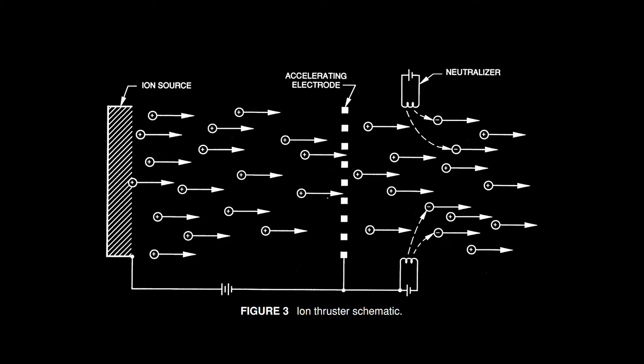That's a schematic of an ion thruster. Here is an ion source, here they are accelerated and then exhausted from one side, which makes the spacecraft move. But also the exhaust needs to be neutralized. So here we have three main elements.